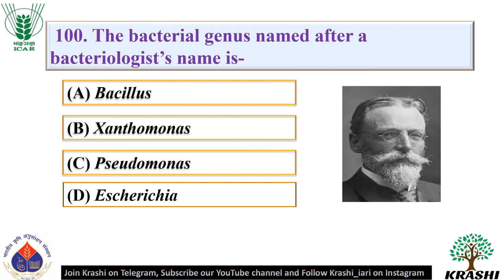Question number 100: The bacterial genus named after a bacteriologist's name is. The correct answer is option D — Escherichia. It was named after Theodore Escherich in 1885 after its discovery. Thank you.